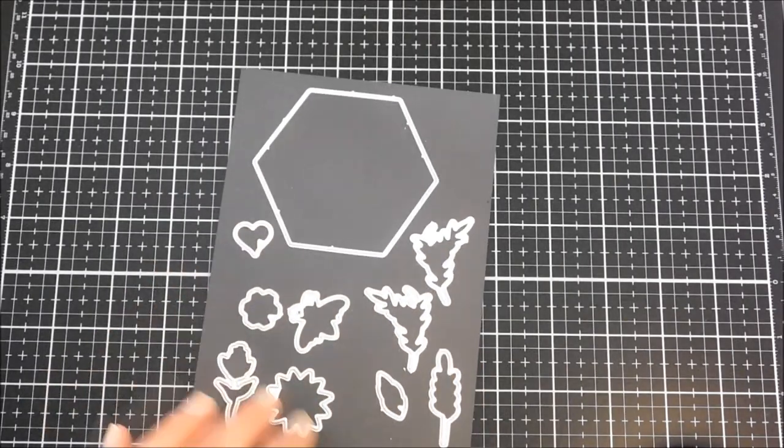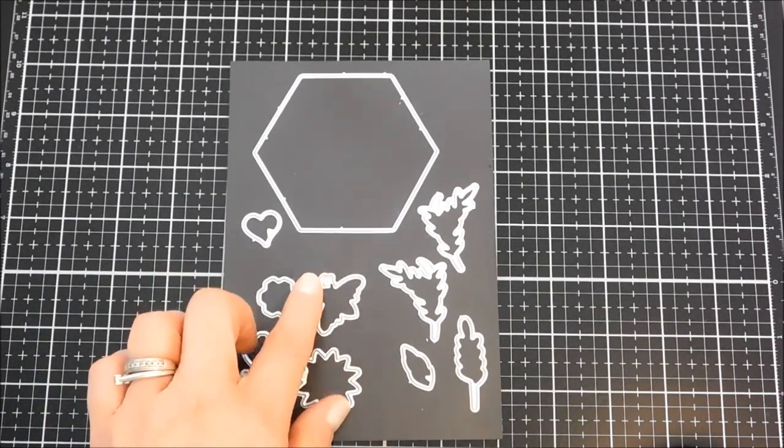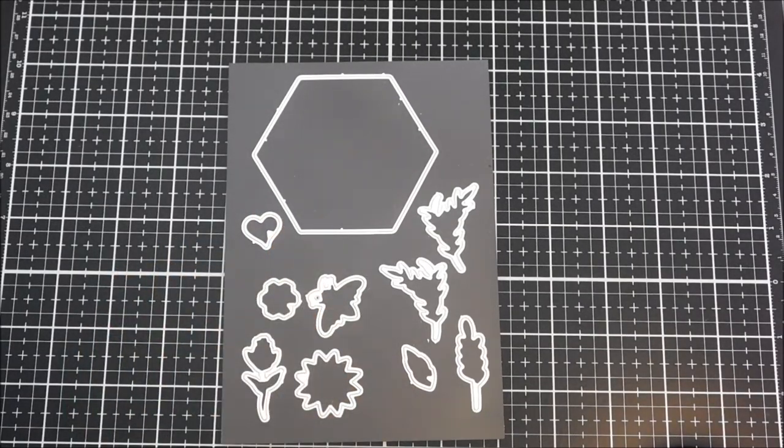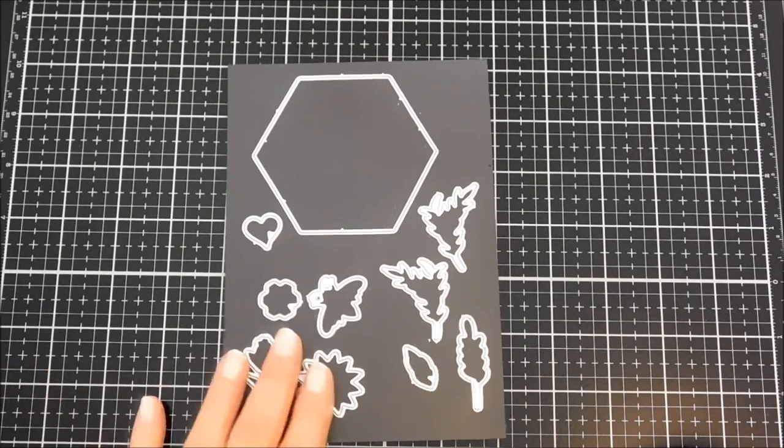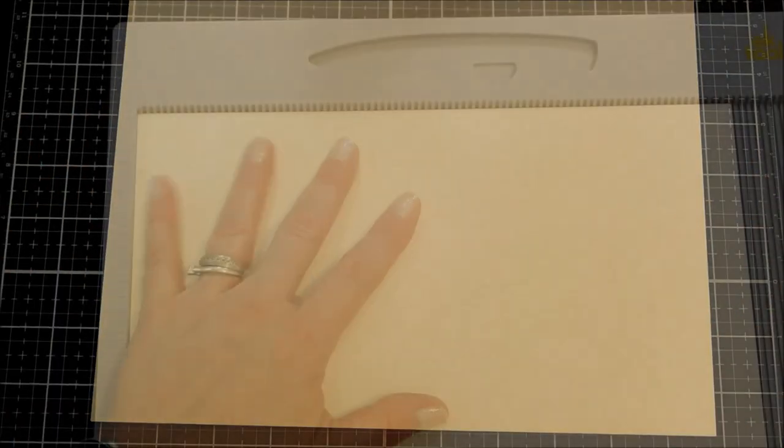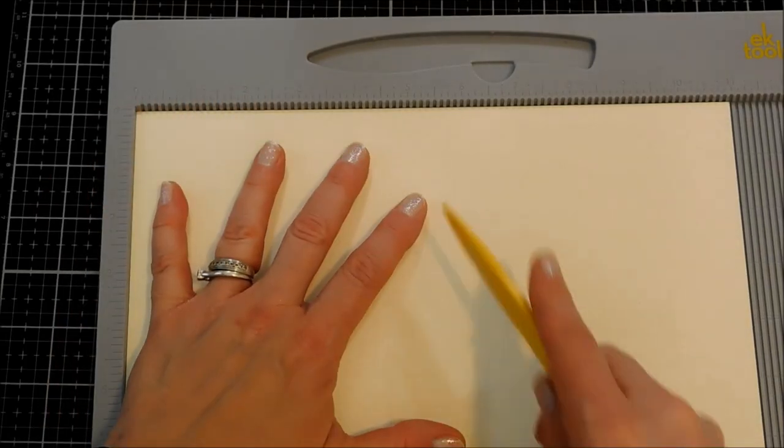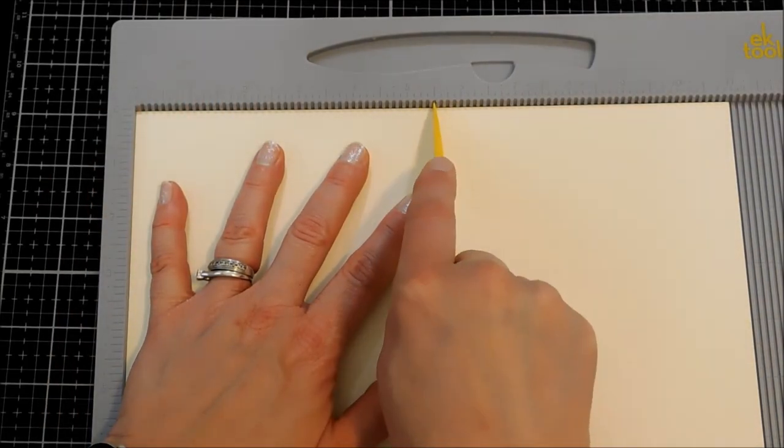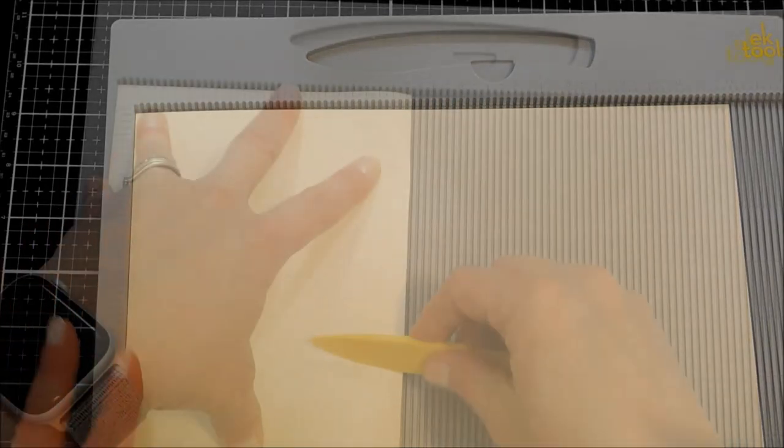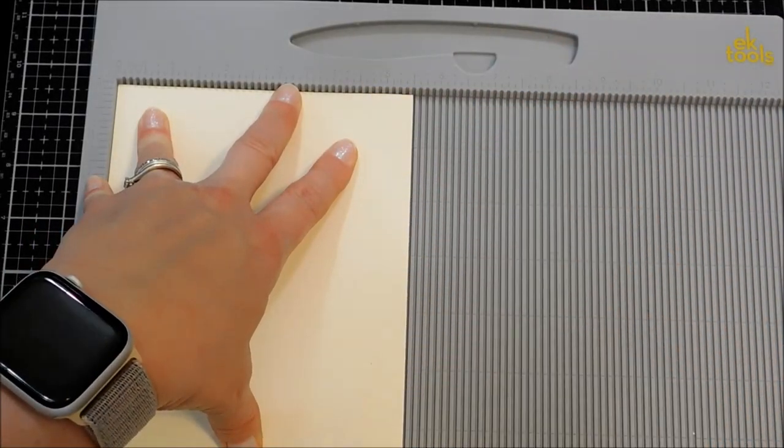With the coordinating die set, I really want to build a honeycomb on the front of my card using the hexagon die from the set. That's a large die, so I'm going to be making a larger card. I'm making an A9, which is just an 8 1/2 by 11 piece of cardstock folded in half. I'm going to score that right down the middle at 5 1/2. The finished card is going to be 5 1/2 by 8 1/2.